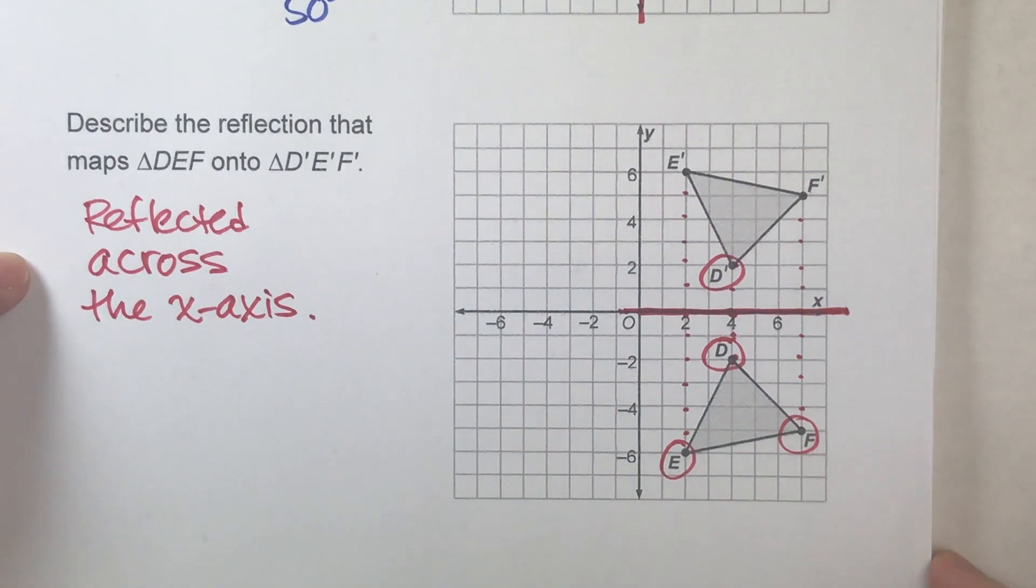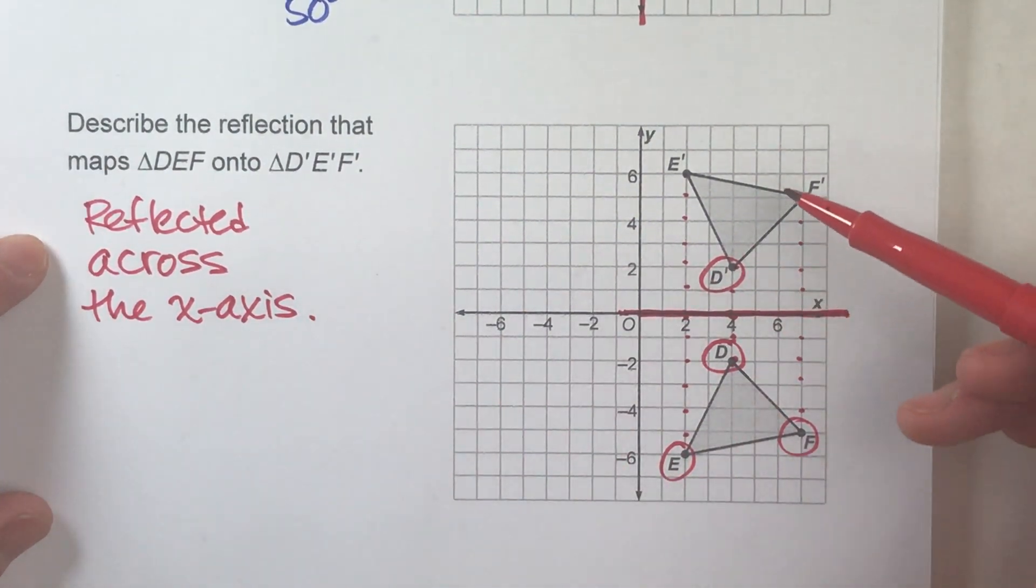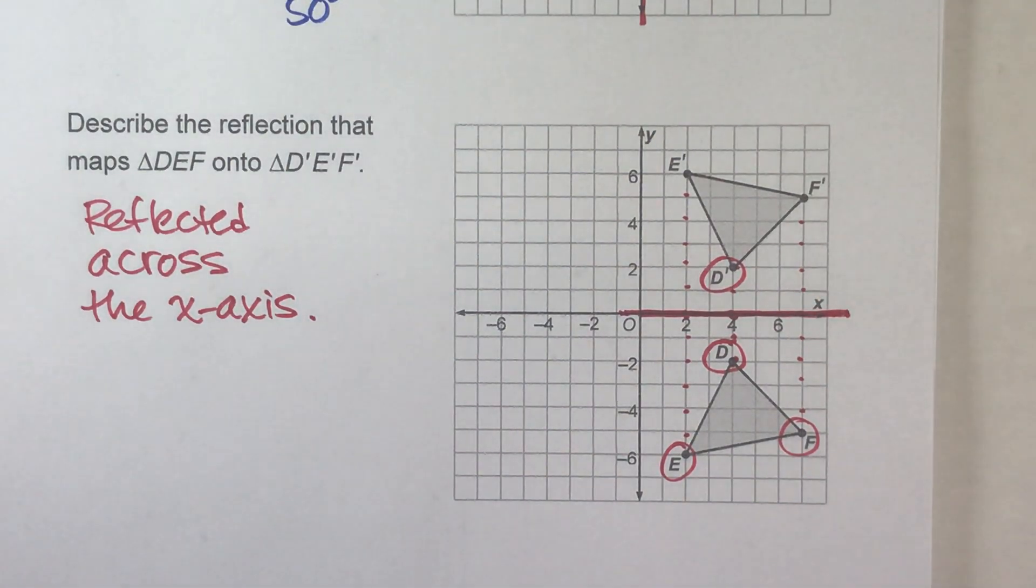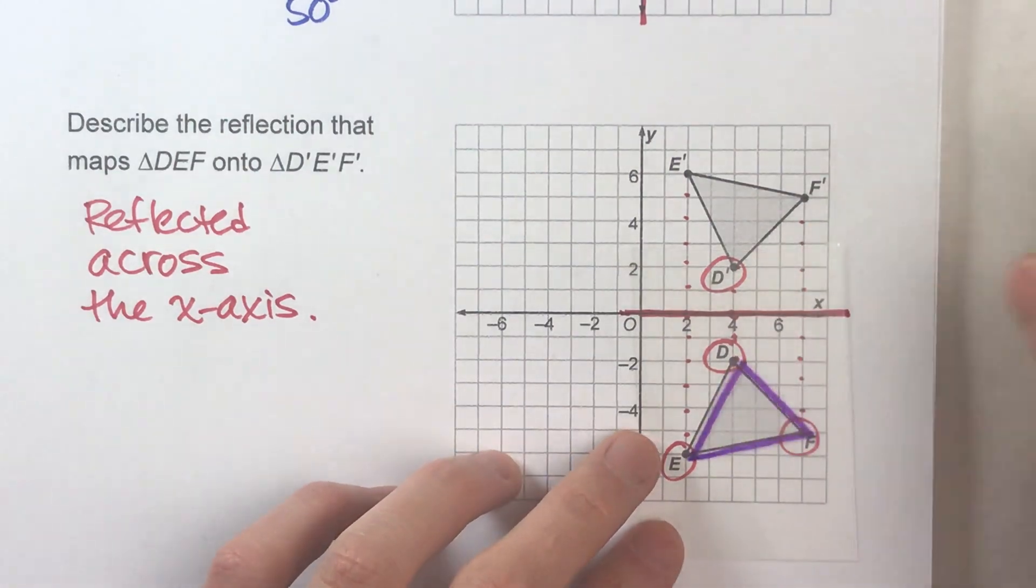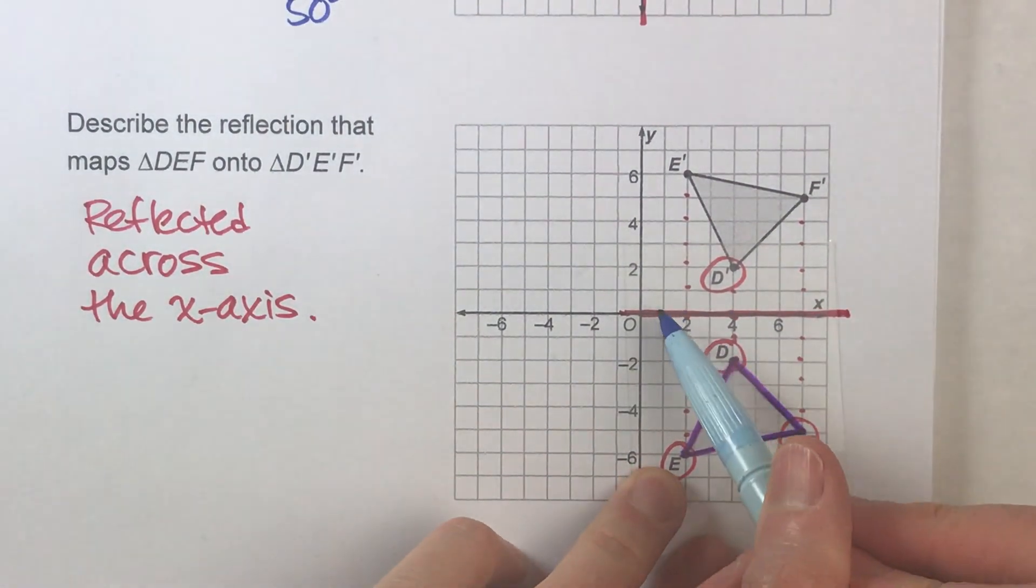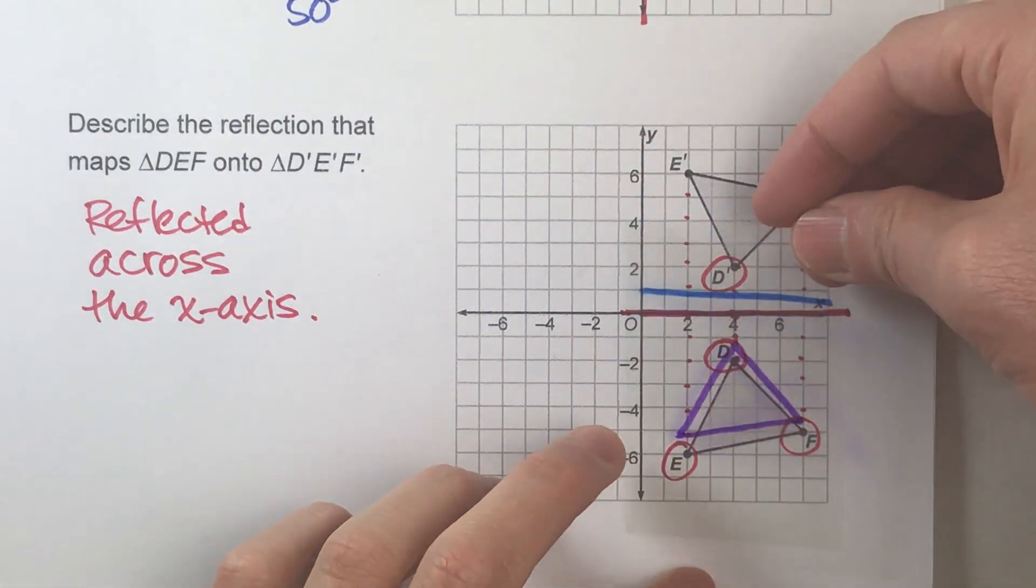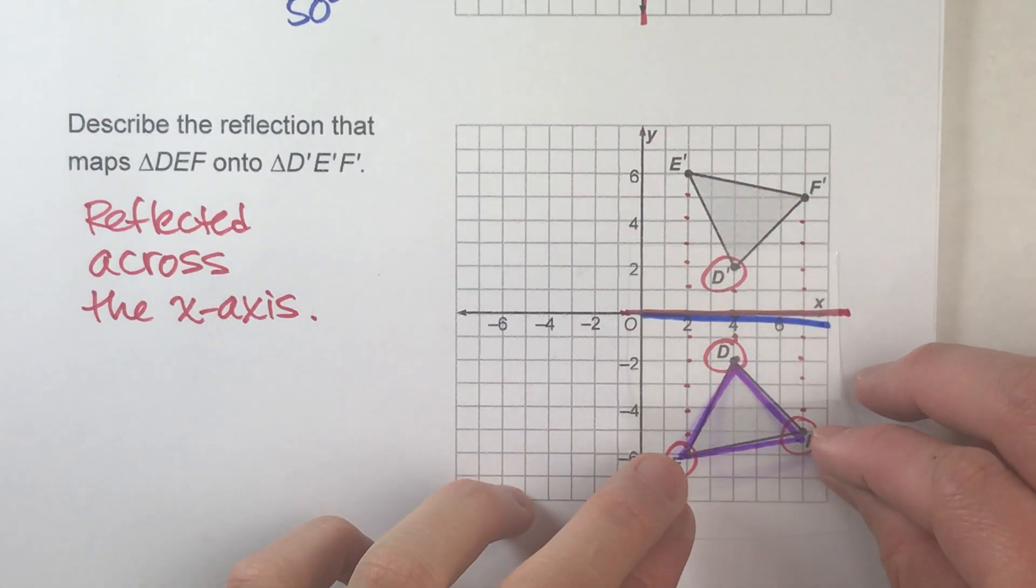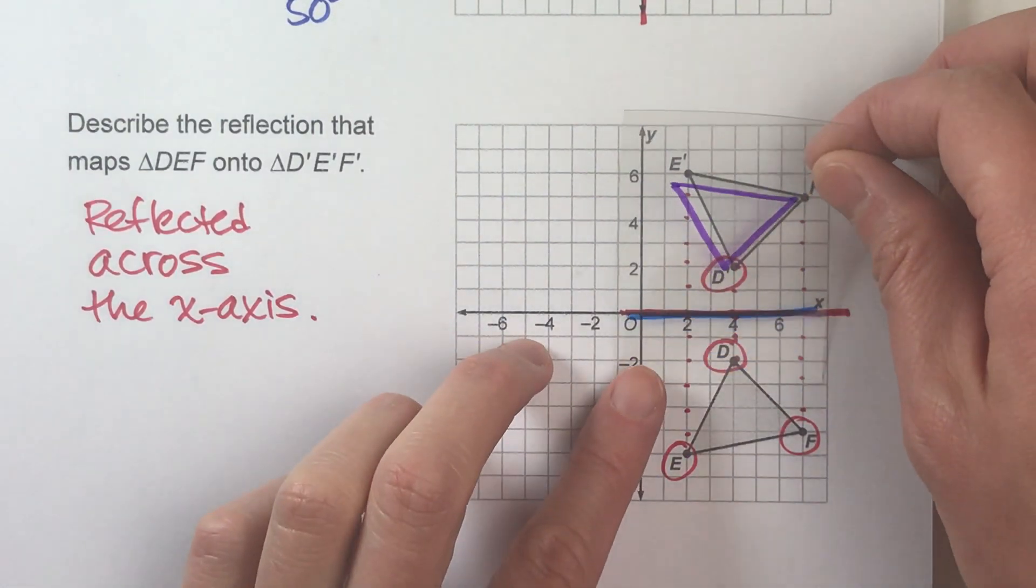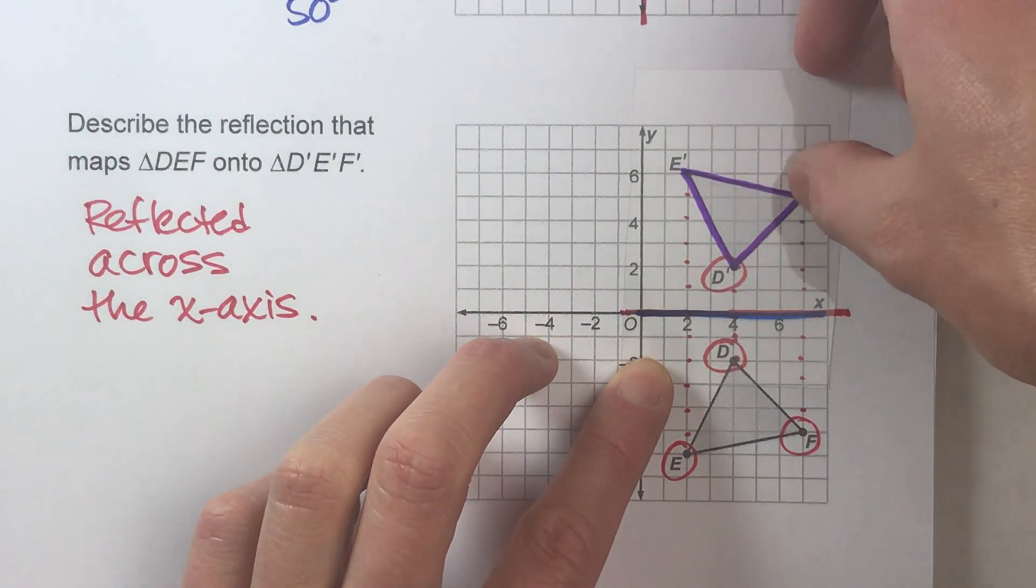So to describe this reflection, we would say it's reflected across the x-axis. And that's enough to describe the reflection, because all we need to do is state where we are reflecting the image across. And if you want to check just to make sure, what we can do is take a little transparency here. Now I'm going to draw in my line of reflection, which is the x-axis. And hopefully, if I reflect it over that line, it should end up right on this other one. And notice, it does.